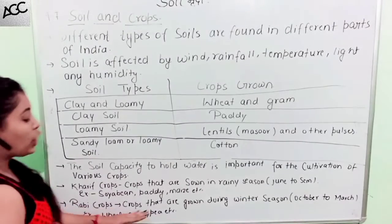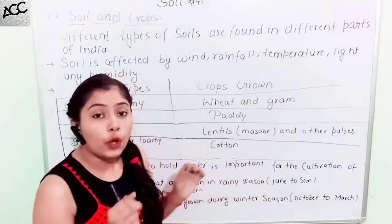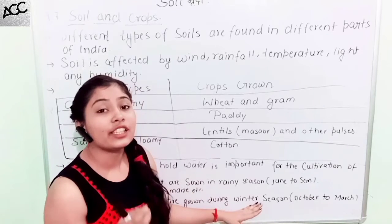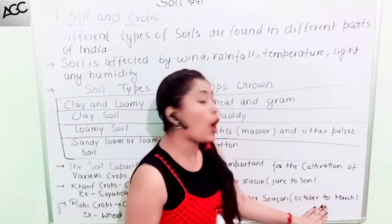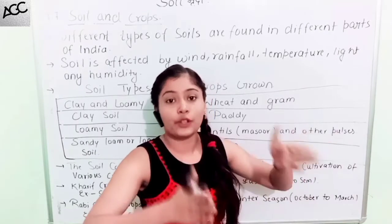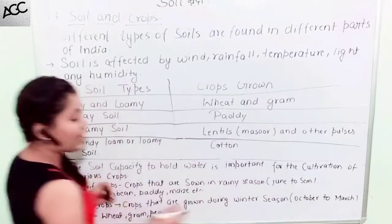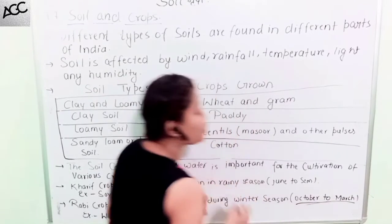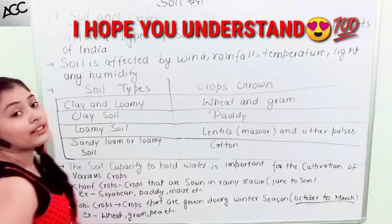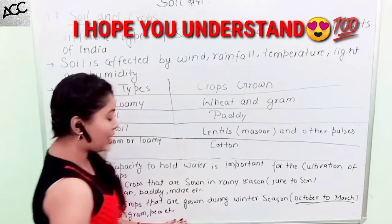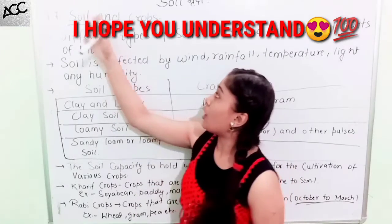Rabi crops start to grow during the winter season from October to March. Because it is very cold in these months — October to March — we call them Rabi crops. Examples are wheat, gram, and tea. These are all examples of Rabi crops. So, that covers soil and crops.